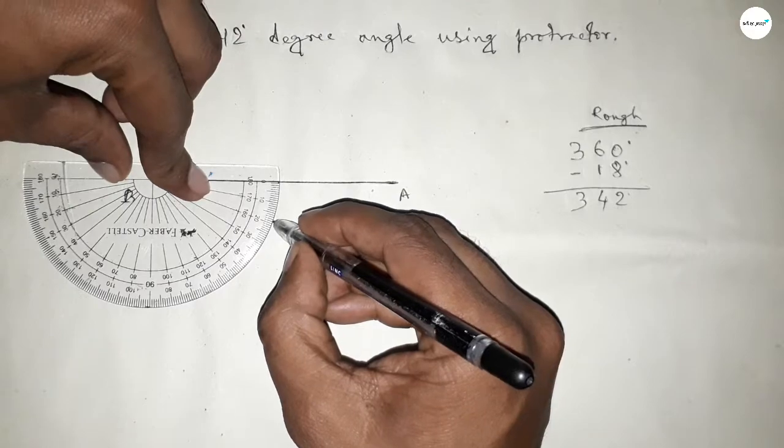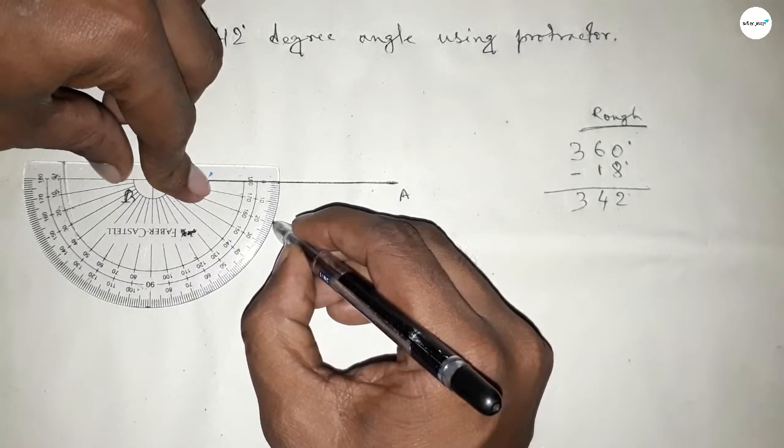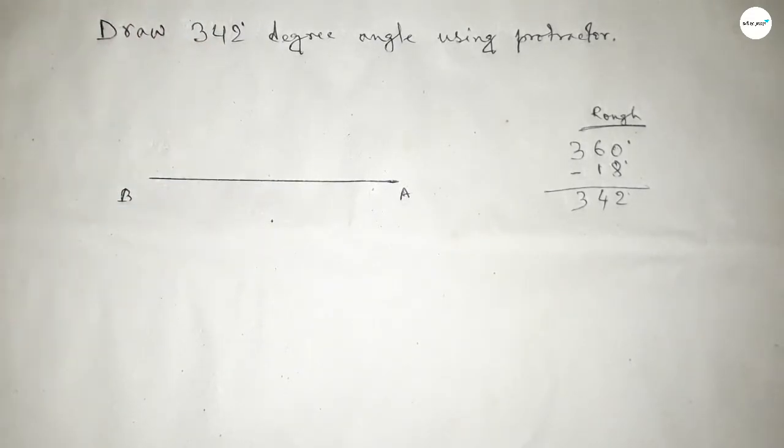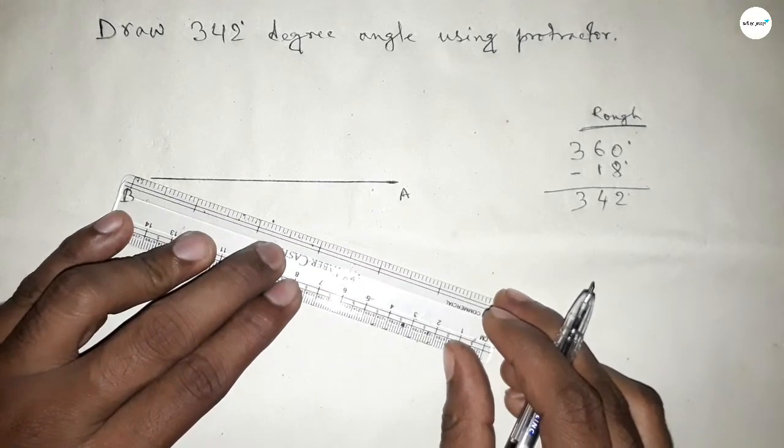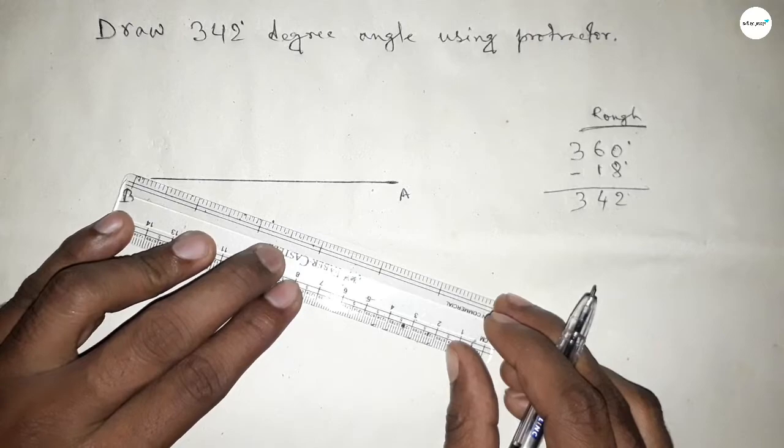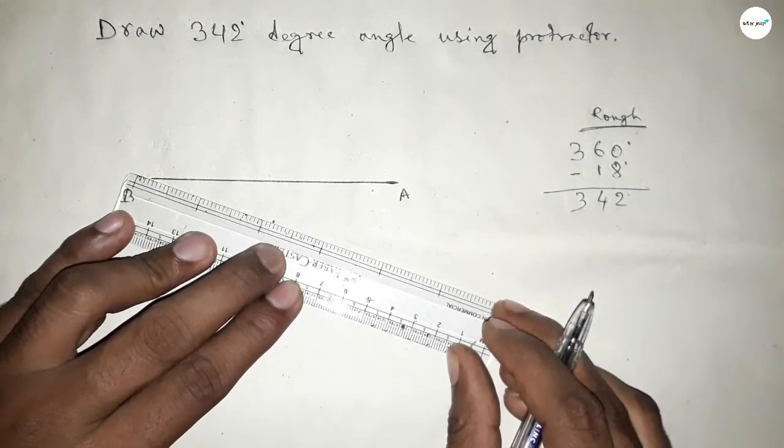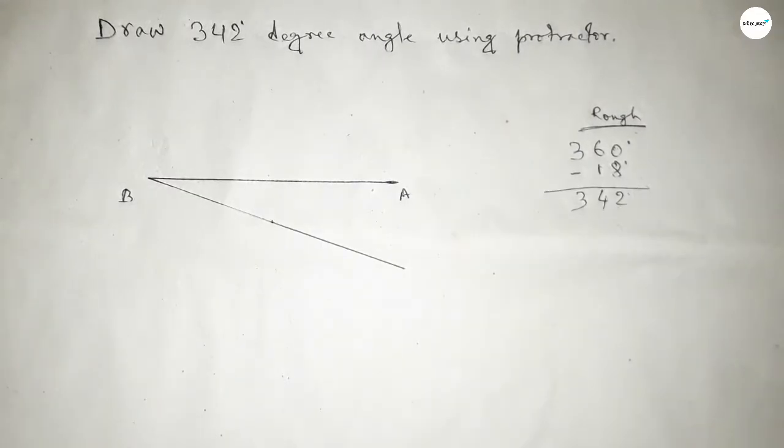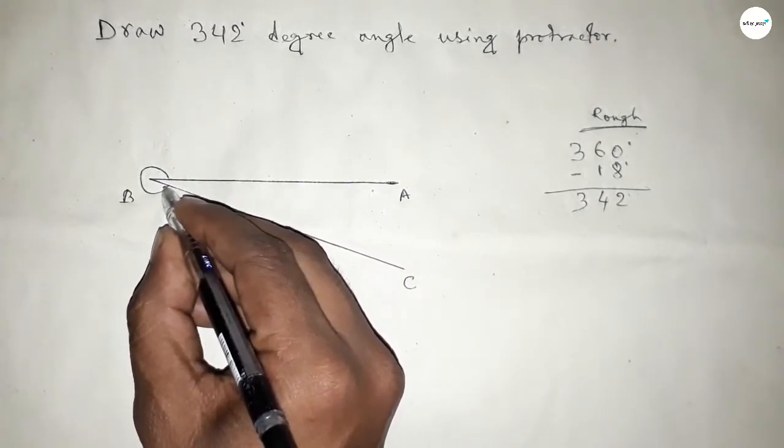So if we subtract 18 degree angle from 360 degrees, then we can get 342 degree angle. So now joining this one to get 342 degree angle.